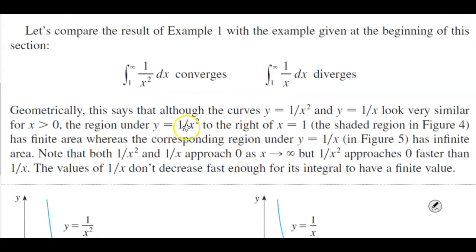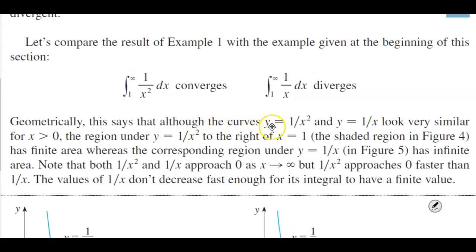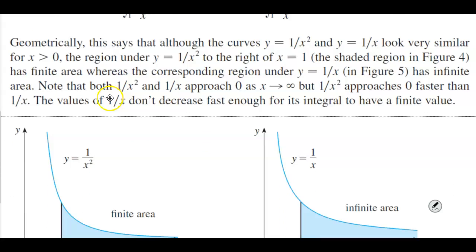Geometrically, this says that although the curves y equals 1 over x squared and y equals 1 over x look very similar for x greater than 0, the region under y equals 1 over x squared to the right of x equals 1, which is the shaded region in figure 4, has a finite area,